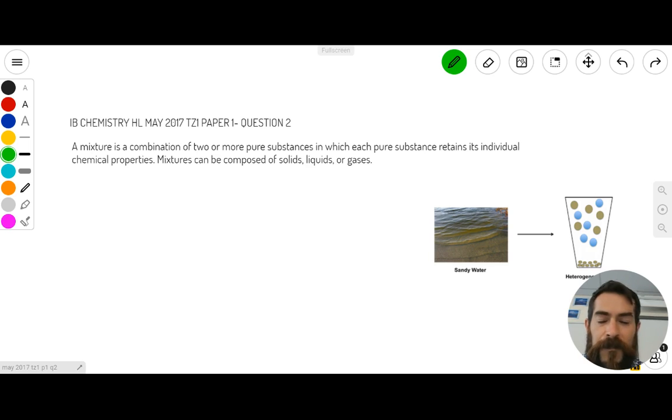And a mixture, I've just quoted the definition I found online for you here. So a mixture is a combination of two or more pure substances in which each pure substance retains its individual chemical properties. Mixtures can be composed of solids, liquids, or gases. Now this part here is really key for answering this multiple choice question. I'll come back to that in a minute.